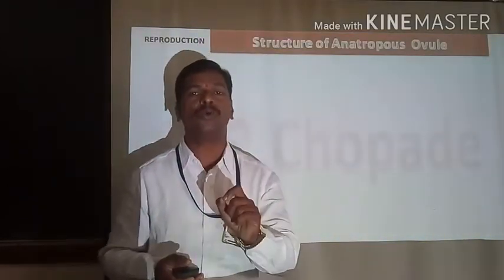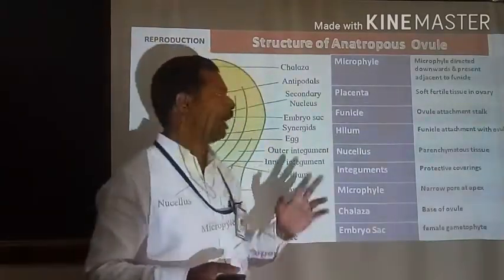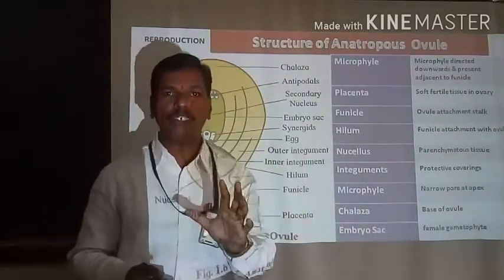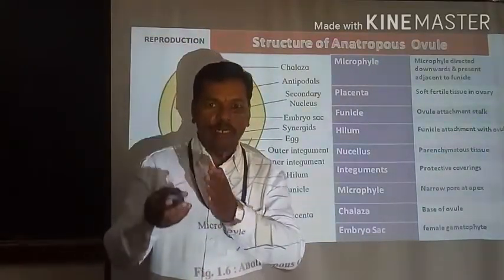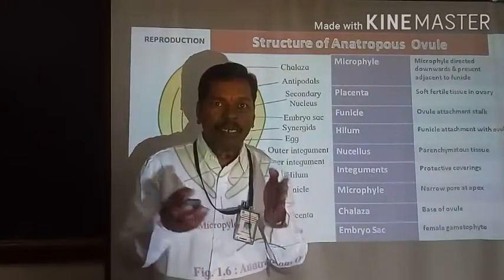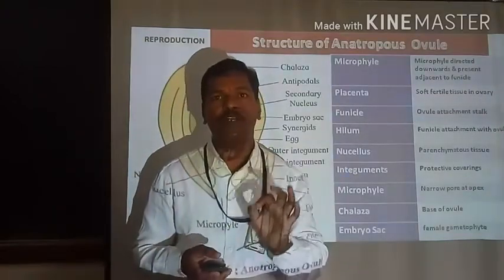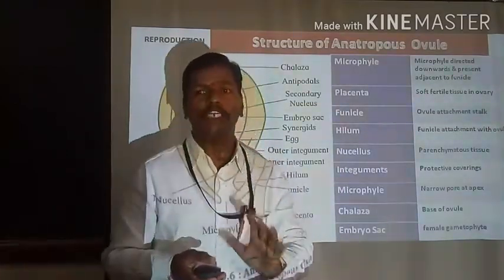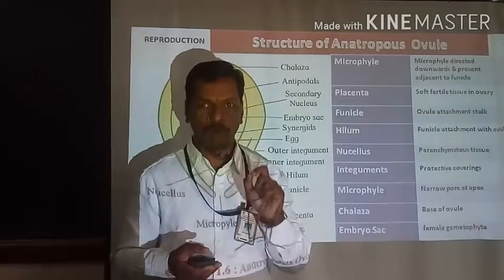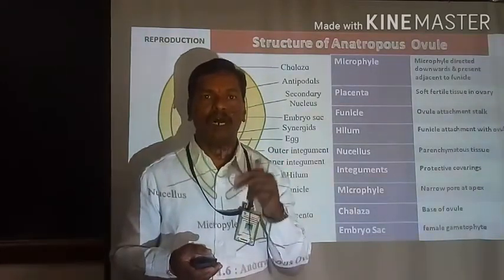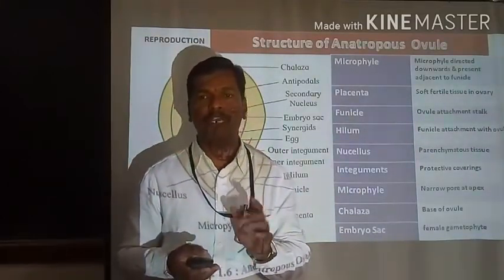We have to discuss the structure of the anatropous ovule. When the stock — that is, the funicle — and the micropyle come adjacent and parallel to each other, that specific ovule is said to be the anatropous ovule. We discuss each part of the ovule one by one. The basal part is said to be the chalaza, and the apical portion or apical core is said to be the micropyle.